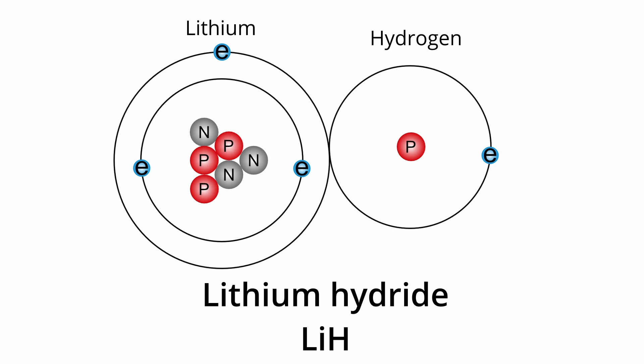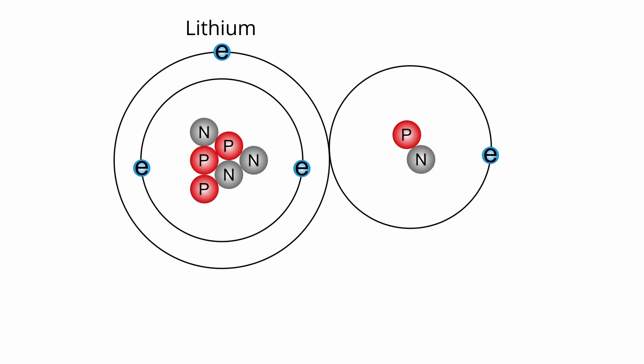But the hydrogen in this compound is not of the normal hydrogen. Instead, it's an isotope of hydrogen that contains a neutron, so it's called deuterium instead of hydrogen. And because of this, the compound is called lithium deuteride instead of lithium hydride.